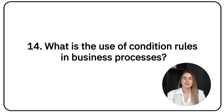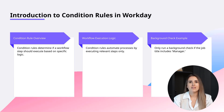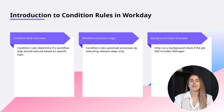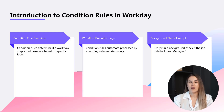Question fourteen: What is the use of condition rules in business processes? Condition rules decide whether a step in a workflow should be executed based on logic. For example, only run a background check if the job title includes 'manager.'